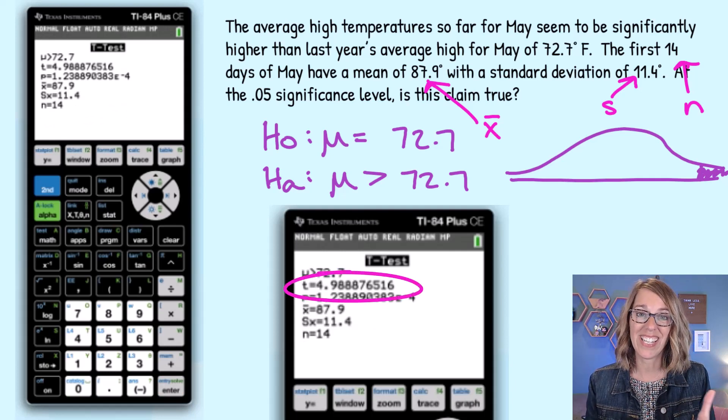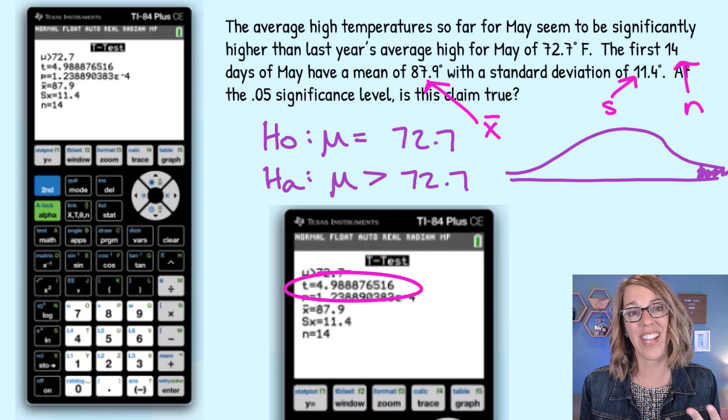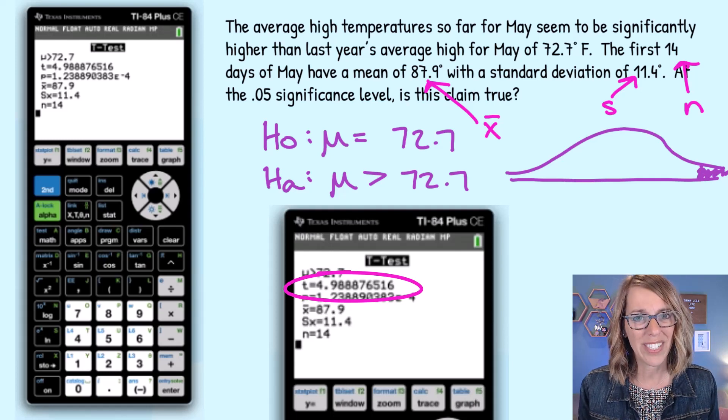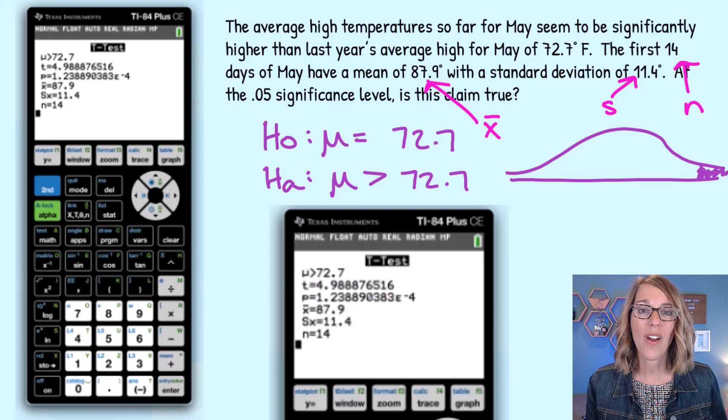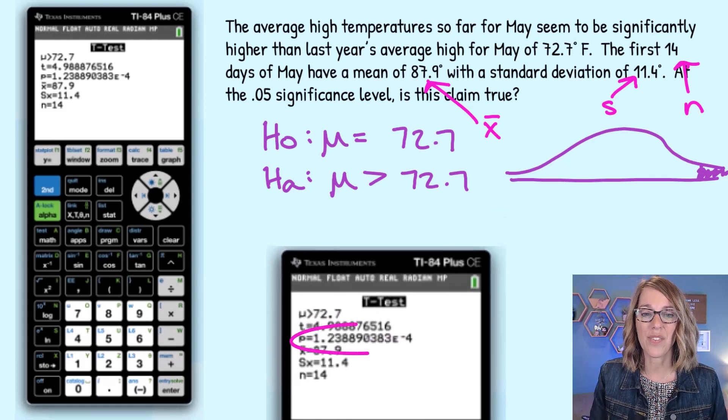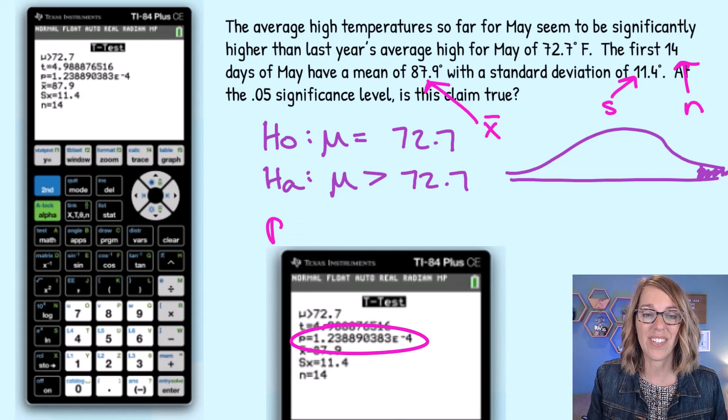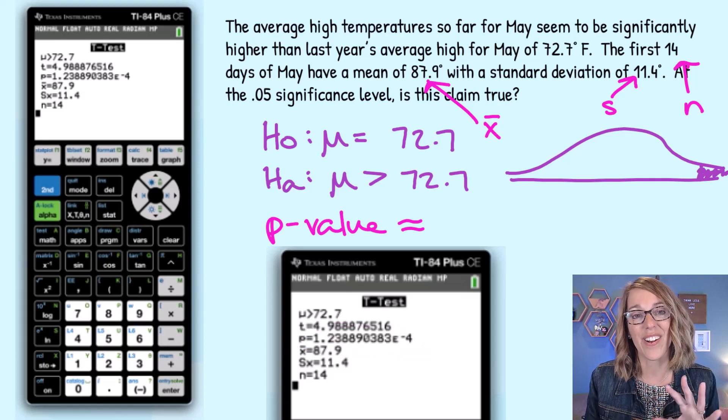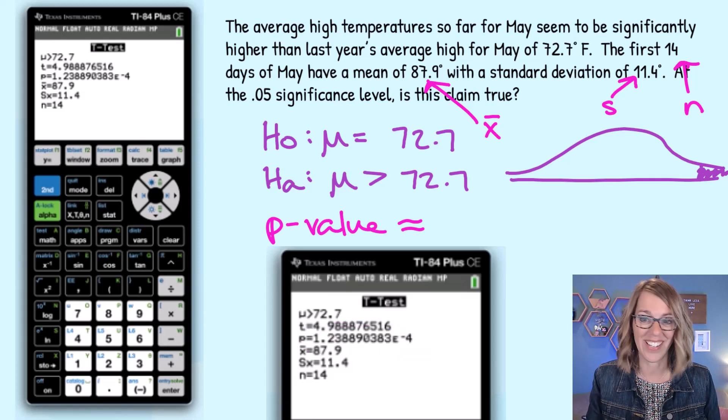I am given my test t, that's that 4.9888, almost five standard deviations away which is definitely significant. We are also given that p-value which is tiny. That p-value is given to us in scientific notation. So this is the size of the tail that our sample mean cuts off and it's tiny.